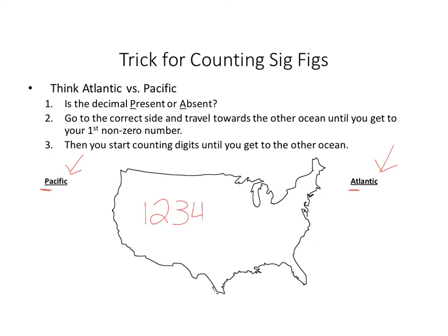For example, take a number with no decimal present — it's absent, so I start on the Atlantic side. I go to the first number that's not a zero, and from there I count toward the other ocean: 1, 2, 3, 4. So there are four sig figs in that number.